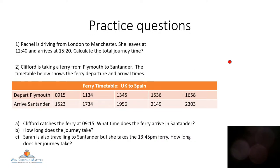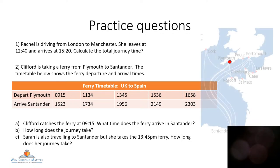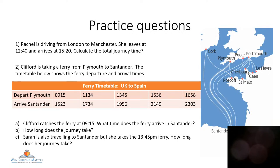Let's do some practice questions together. Got your piece of paper and pen ready? Rachel is driving from London to Manchester. She leaves at 12:40 and she arrives at 15:20. Can you calculate the total journey time? The second question is Clifford taking his ferry from Plymouth to Santander. Can you see the timetable that shows the ferry departure and arrival times? Clifford catches the ferry at 9:15. What time did the ferry arrive in Santander, and how long did his journey from Plymouth to Santander take?